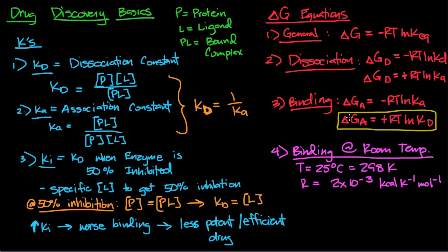The last equation for delta G is the binding that happens at room temperature. This is a specific scenario where our temperature is 25 degrees Celsius or 298 Kelvin. The R value is 2 times 10 to the negative 3 kcals per kelvin times mole. If we're at room temperature and dealing with kcals, we can say that delta G of association or binding equals 1.4 kcals times your log Kd.